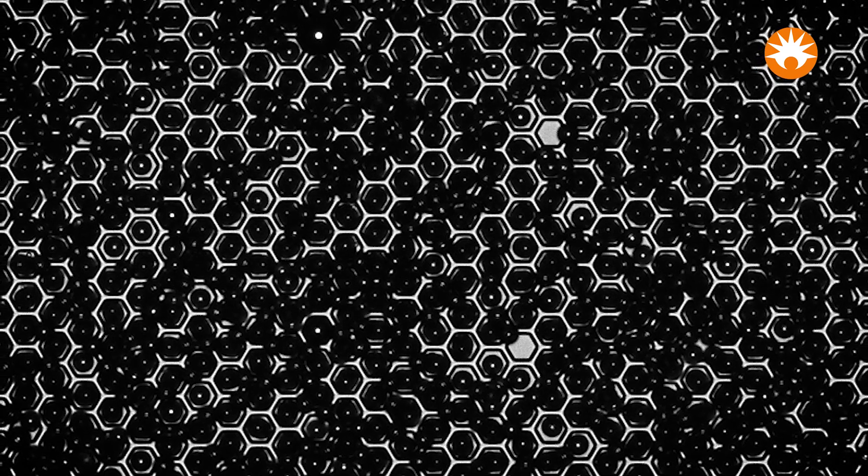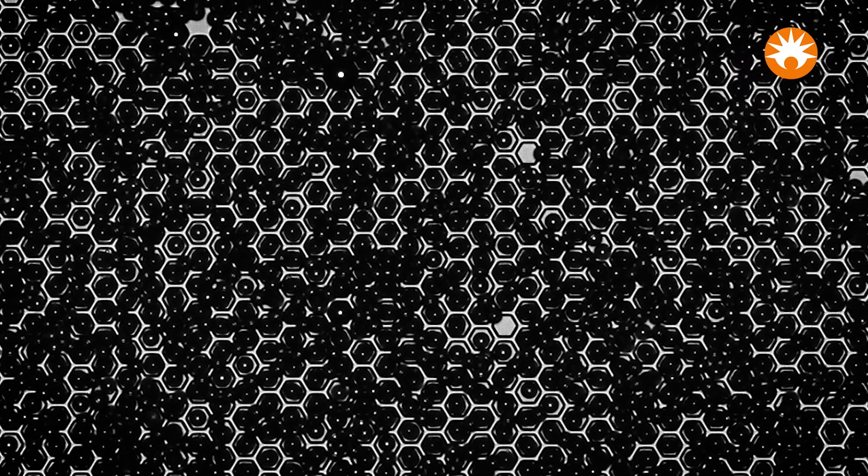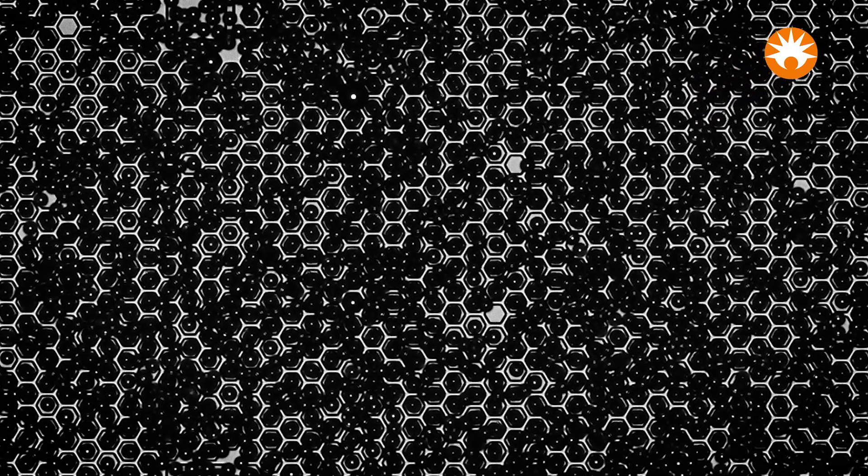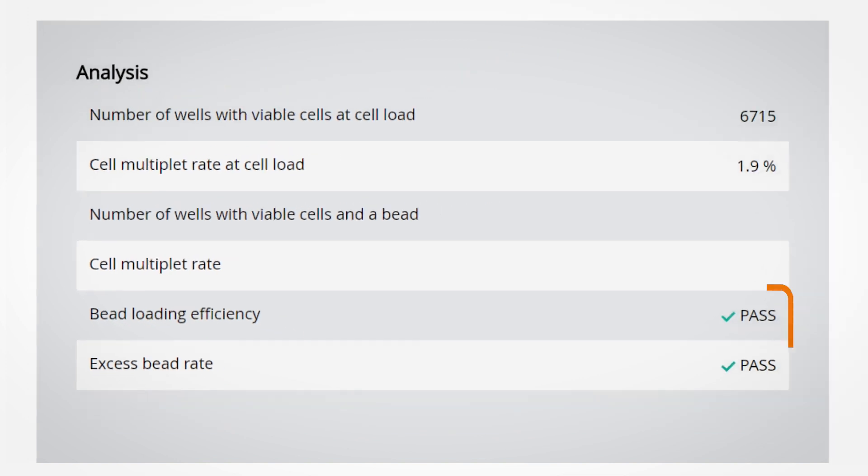An excess of beads is loaded into the cartridge at this stage to ensure nearly all wells are occupied by a bead. The scanner will report back two pass or fail metrics for this stage: bead loading efficiency and excess bead rate. Continuing with our experiment, we can see both metrics passed.